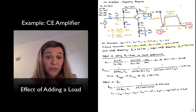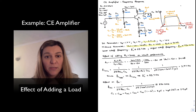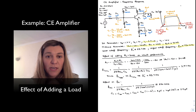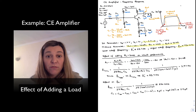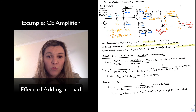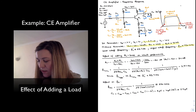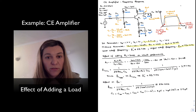So the bandwidth has increased. What was limiting the bandwidth was the large gain and therefore the high Miller capacitance. Now we've reduced the effective gain by half, reducing the Miller input capacitance by half, which has almost doubled the bandwidth — it used to be around 430 kHz, now it's around 850 kHz.